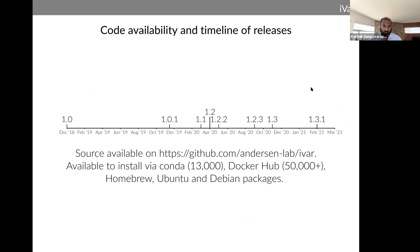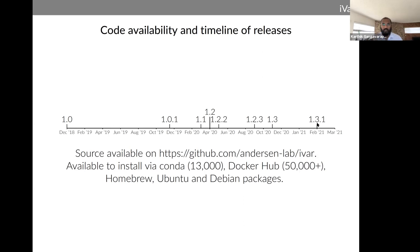We released IVAR at the end of 2018. Once the SARS-CoV-2 pandemic started, the Primal Scheme protocol became exceedingly popular and is probably the most widely used protocol to sequence SARS-CoV-2 genomes. As a result, many people started using IVAR, as evidenced by the number of releases in 2020. The most recent release addressed a Swift protocol that adds additional bases to the 5-prime end of reads, requiring a fuzzier primer search to account for these bases. IVAR has been reasonably accepted by the community, with over 13,000 downloads on Conda and many more on Docker, and many consortia have been using it, which has been helpful for bug fixes and improving the tool.